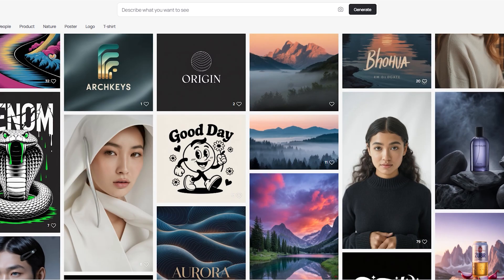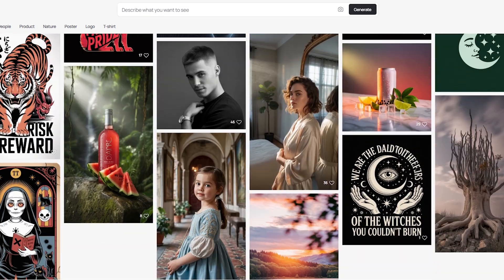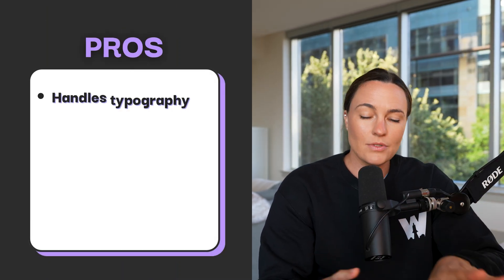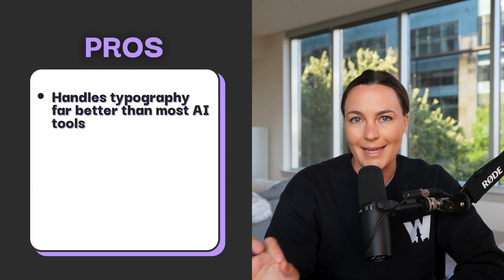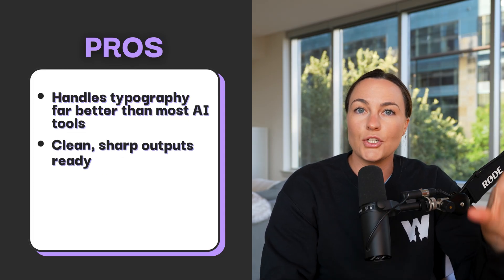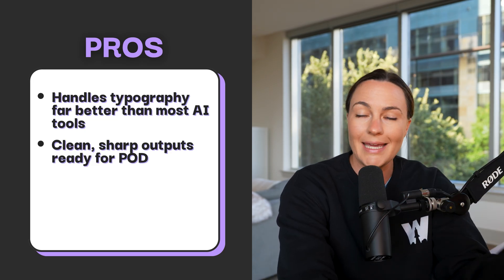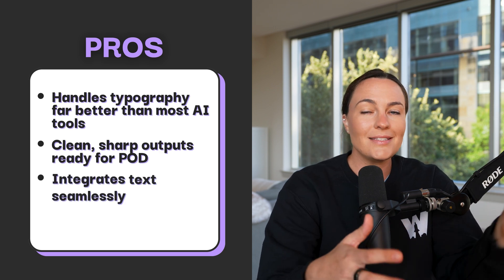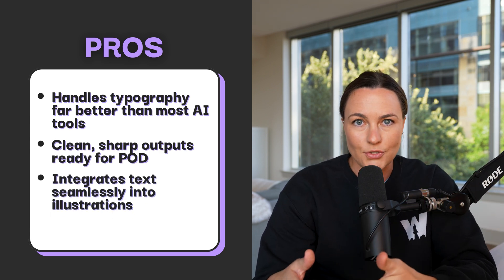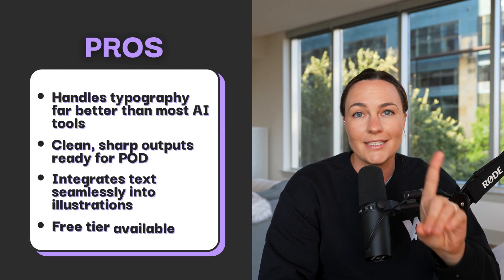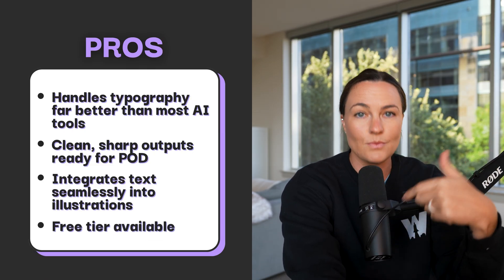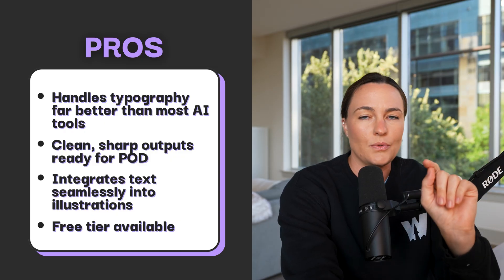Ideogram is one of the best AI tools for handling text inside of designs, which is a huge deal for print on demand sellers making slogan-based products. Its pros include handling typography better than most AI tools — clean, sharp output ready for print on demand. Very rarely do you need to put it into Canva or any other editor. It integrates text seamlessly into illustrations, and they also have a free tier available.